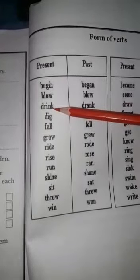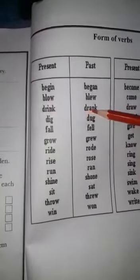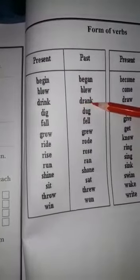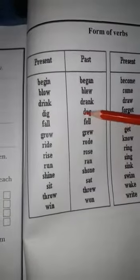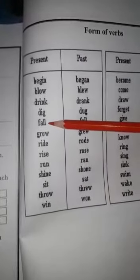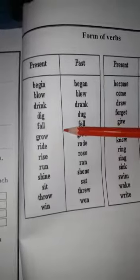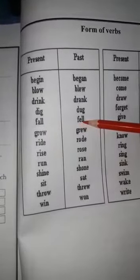Next dekhein, D-R-I-N-K, drink. Its second form kya hai: D-R-A-N-K, drank. Us ke baad hai D-I-G, dig. Dig ki second form kya hai: D-U-G, dug. Us ke baad dekhein, F-A-L-L, fall. Fall ki second form kya hai: F-E-L-L, fell.